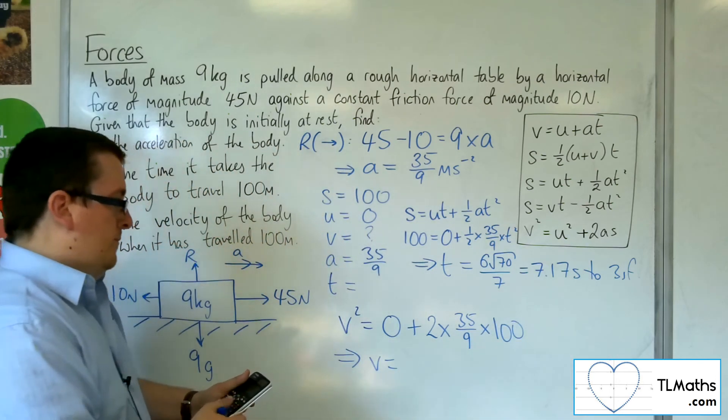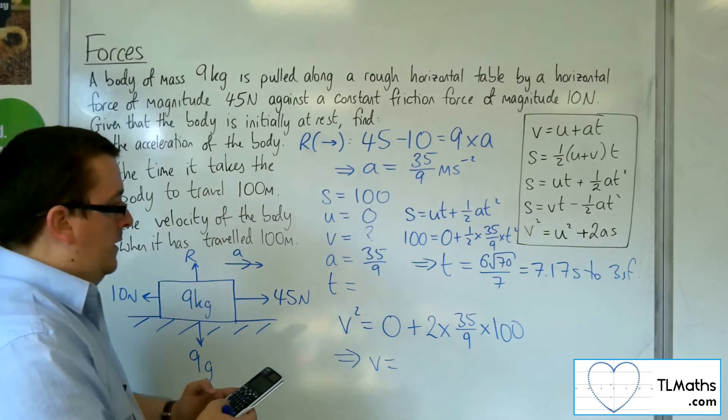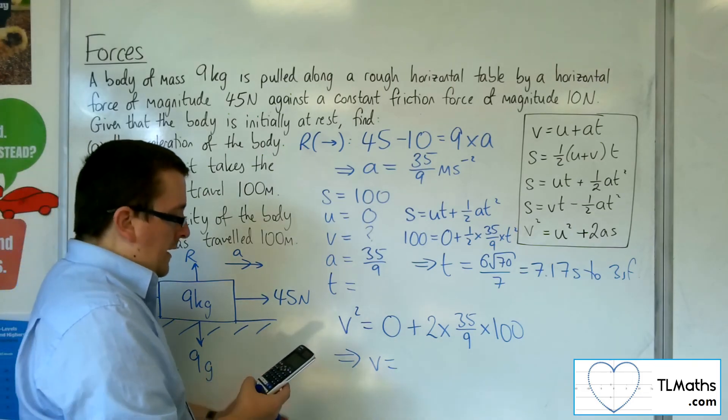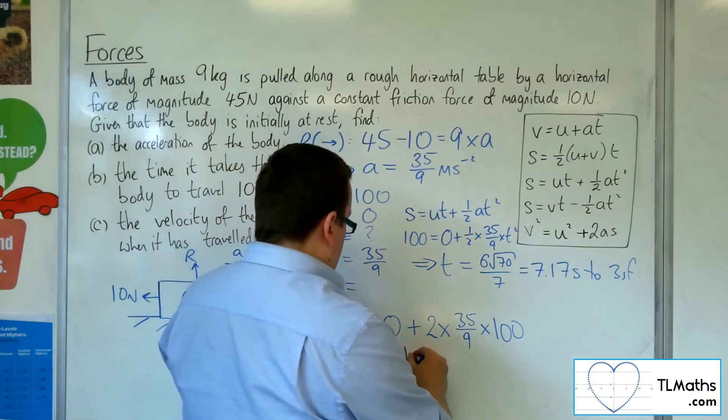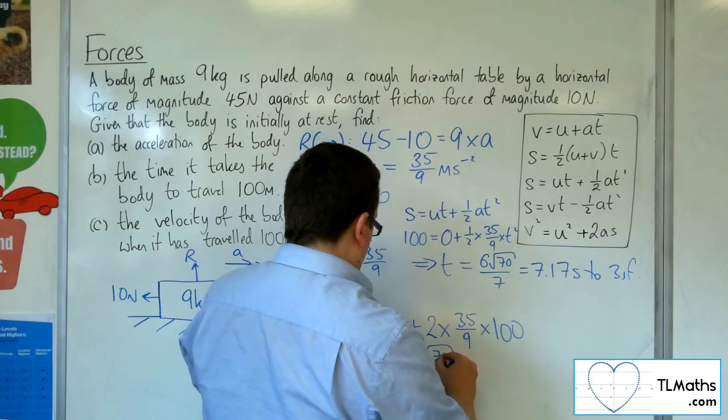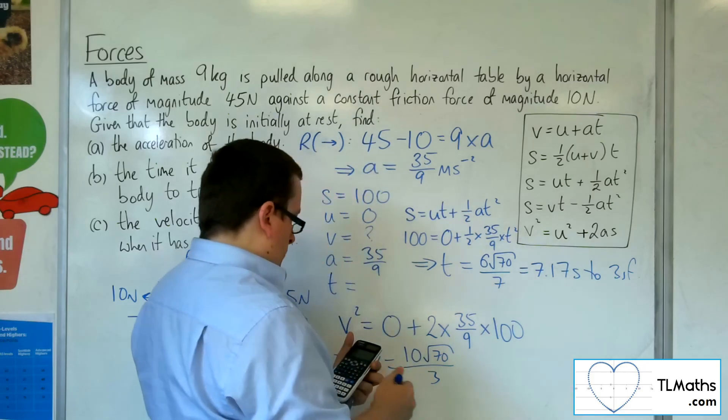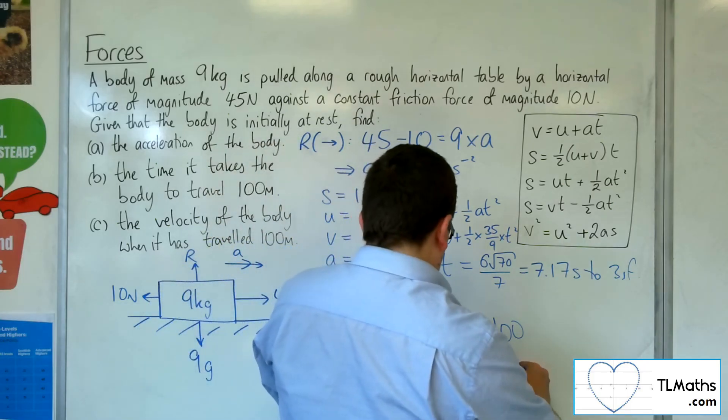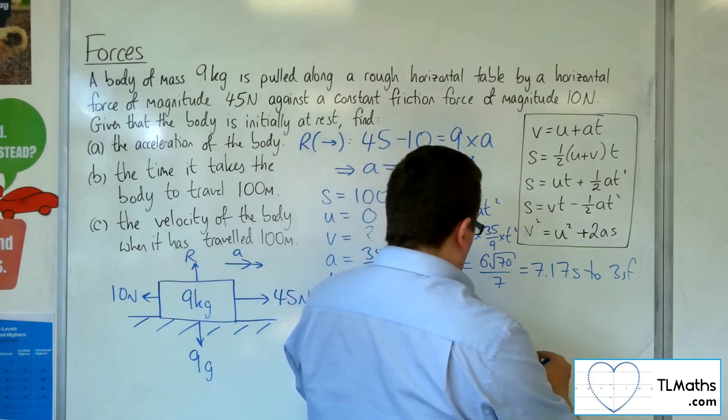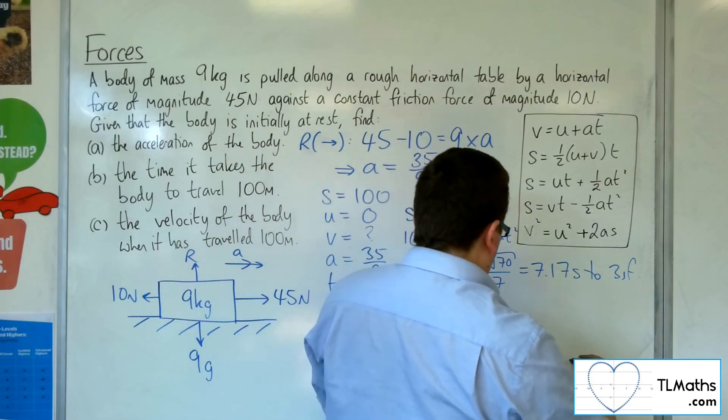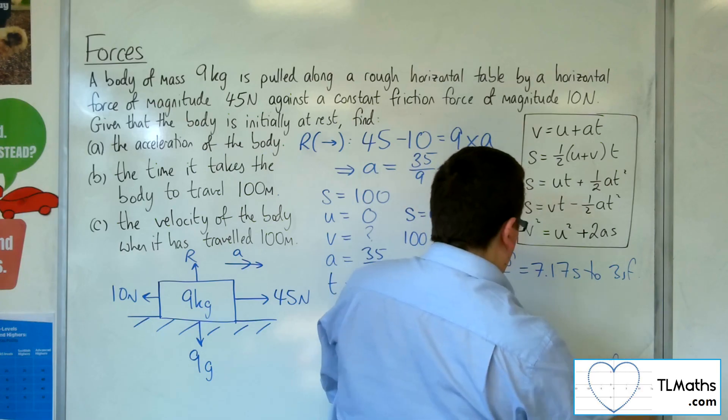So 2 lots of 35 over 9 times by 100 is 7,000 over 9. Square root that, we get 10 root 70 over 3, which is 27.88866755. So 27.9 metres per second to 3 sig fig.